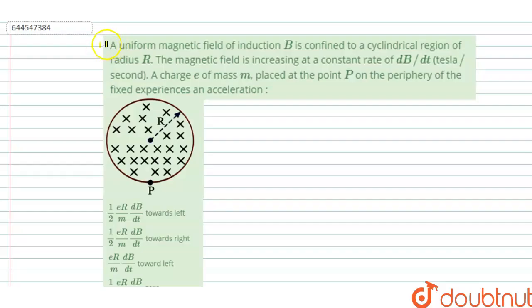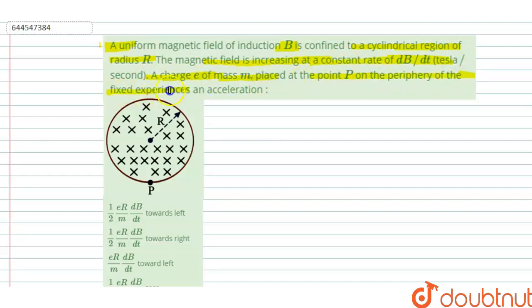Hello, welcome to Doubtnut. In this question, a uniform magnetic field of induction B is confined to a cylindrical region of radius R. The magnetic field is increasing at a constant rate of dB/dt. A charge E of mass M is placed at point P on the periphery. We have to find the value of the acceleration.